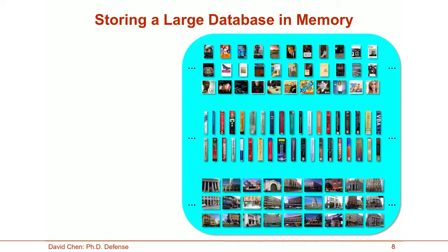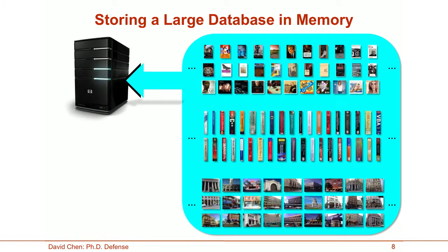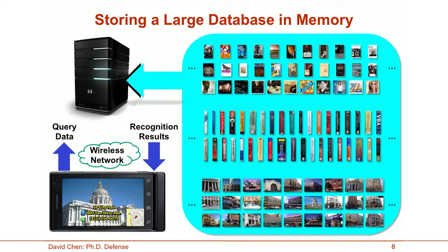We also need to think about how to represent and store this large database in memory. If we store the database on a server, we would like it to be as compact as possible so that we can index many images and run other memory-intensive processes concurrently. However, if the database is stored on the server, we have to upload query data from the mobile device to get recognition results. If the network latency is high, or if the server is very busy, then the overall query latency will be high.